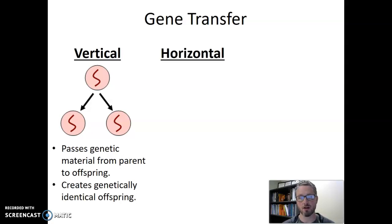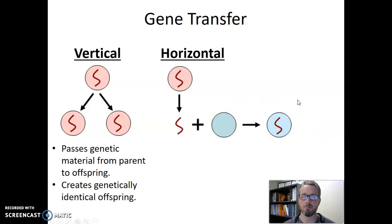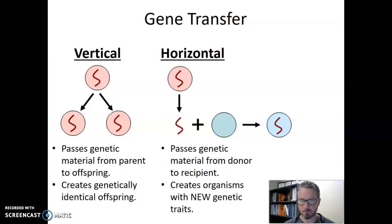That's where we start looking at horizontal gene transfer. Gene transfer is any time genetic material is passed from one cell to another. In horizontal gene transfer, one cell gives up a little piece of DNA and adds it to a second cell, and the second cell gains that DNA. We always look at how genetic material is passed from a donor cell giving away information to a recipient cell gaining that information. What's exciting about horizontal gene transfer is it creates organisms with new genetic traits.